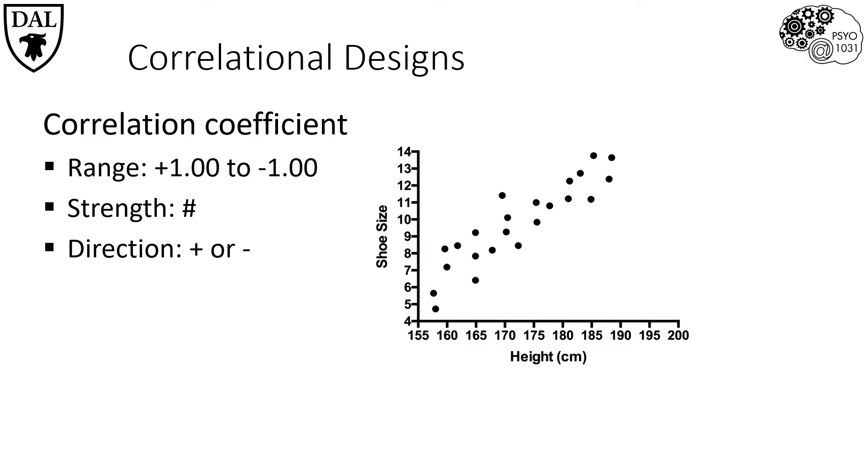By looking at the data points on this figure we can see as people's height increases so does their shoe size. Thus the data points on the scatterplot show a positive relationship.